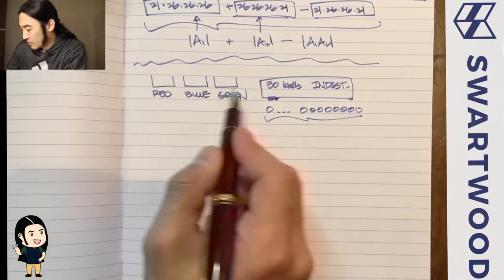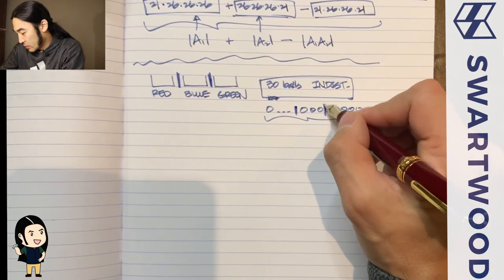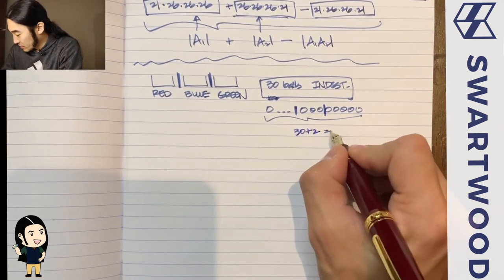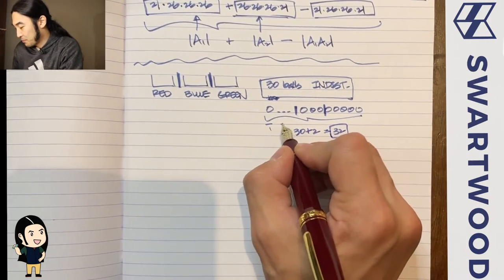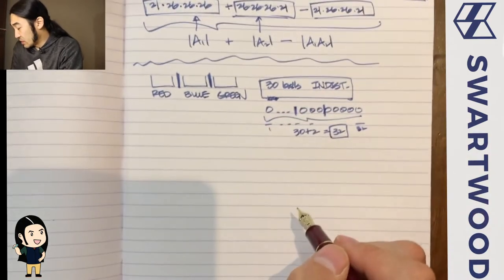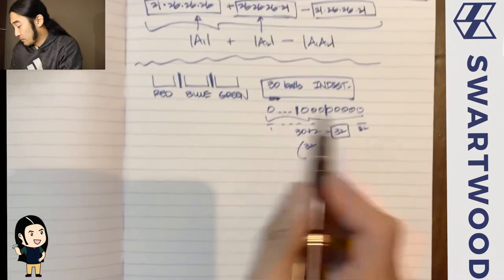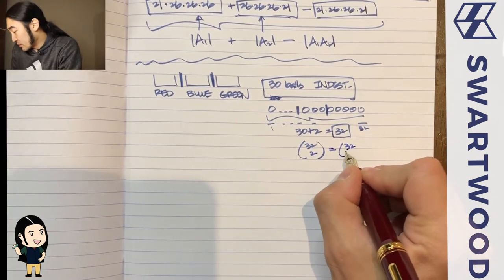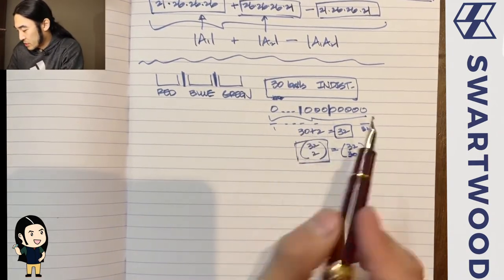To encode three containers, you need two dividers. So you have 30 balls plus 2 dividers — 32 objects total. You can imagine 32 slots, and you choose which 2 slots are the dividers, or equivalently which 30 slots are the balls. That's the same thing.